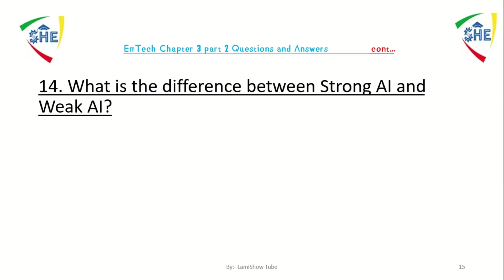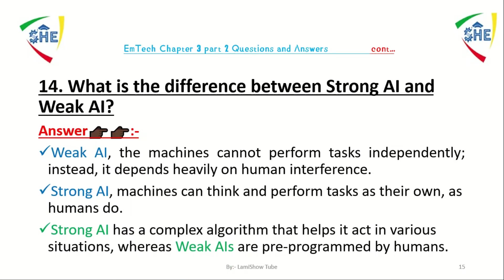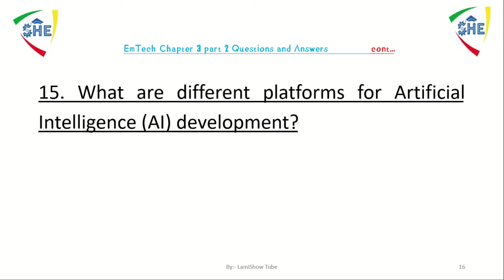Question number 14: what is the difference between strong artificial intelligence and weak artificial intelligence? Weak artificial intelligence machines cannot perform tasks independently and still depend heavily on human intervention. Strong artificial intelligence machines can think and perform tasks on their own as humans do. Strong AI has complex algorithms that help it act in various situations, whereas weak AI is pre-programmed by humans.